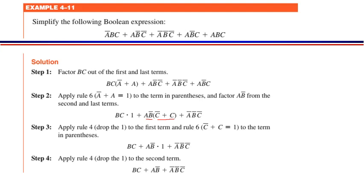Ek aur complex expression given hai jisme different number of terms involve hain aur simplify karna hai. Simplification ka rule yeh hai: pehle check karo ke complex expression mein maximum common variables kaun se hain. Agar teen variables common aa rahe hain kisi terms mein toh unhe ek taraf likh lo. Agar teen variables common nahi aate toh do variables check karo, phir single variable check karo jo multiple terms mein common ho.